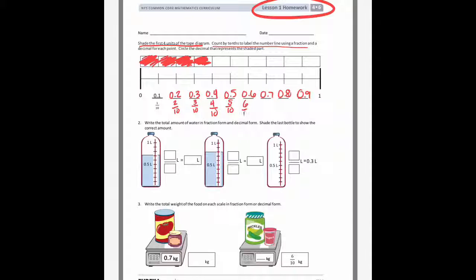So 5 tenths, 6 tenths, 7 tenths, 8 tenths, and 9 tenths. And then it says, 10 tenths would be the whole. And the last step says, circle the decimal that represents the shaded part. Well, 4 parts are shaded, so it would be 4 tenths or 0.4.